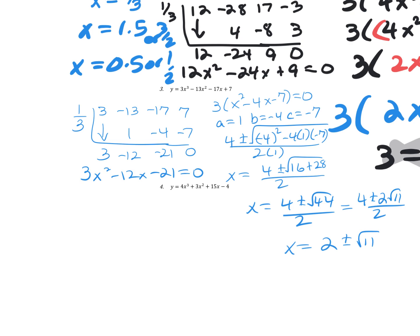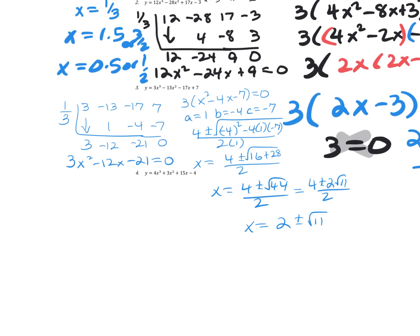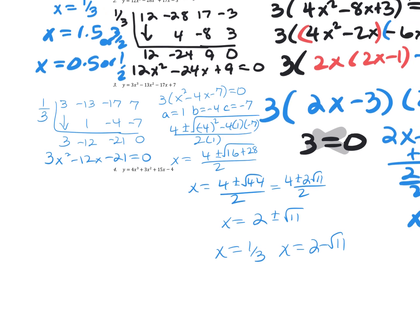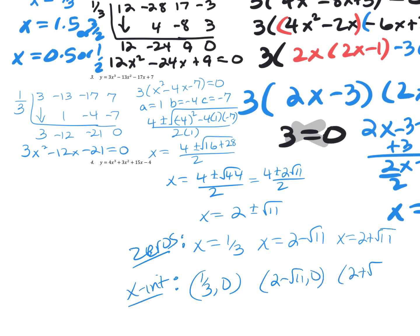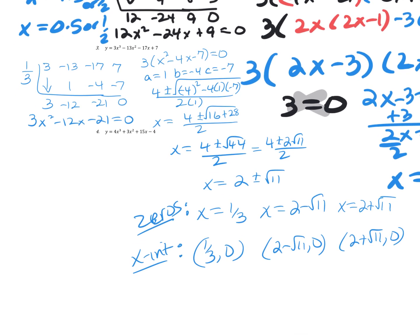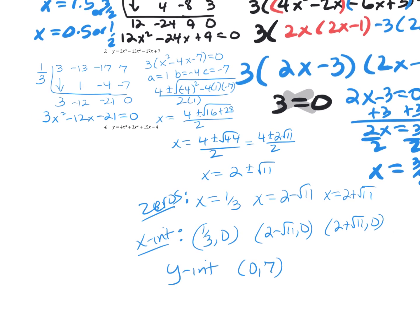So my three zeros for number three (an x-cubed graph) are x equals one third, x equals 2 minus the square root of 11, and x equals 2 plus the square root of 11. My x-intercepts — I can still list radicals as x-intercepts, but if they were imaginary I would not list them: 2 minus root 11 comma 0, and 2 plus root 11 comma 0. The y-intercept is the constant: zero comma 7. You also need to list additional points in between your zeros.